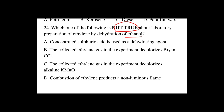A. Concentrated sulfuric acid is used as the dehydrating agent. B. The collected ethylene gas decolorizes bromine in carbon tetrachloride. C. The collected ethylene gas decolorizes alkaline potassium permanganate. D. Decomposition of ethylene products produces a non-luminous flame.